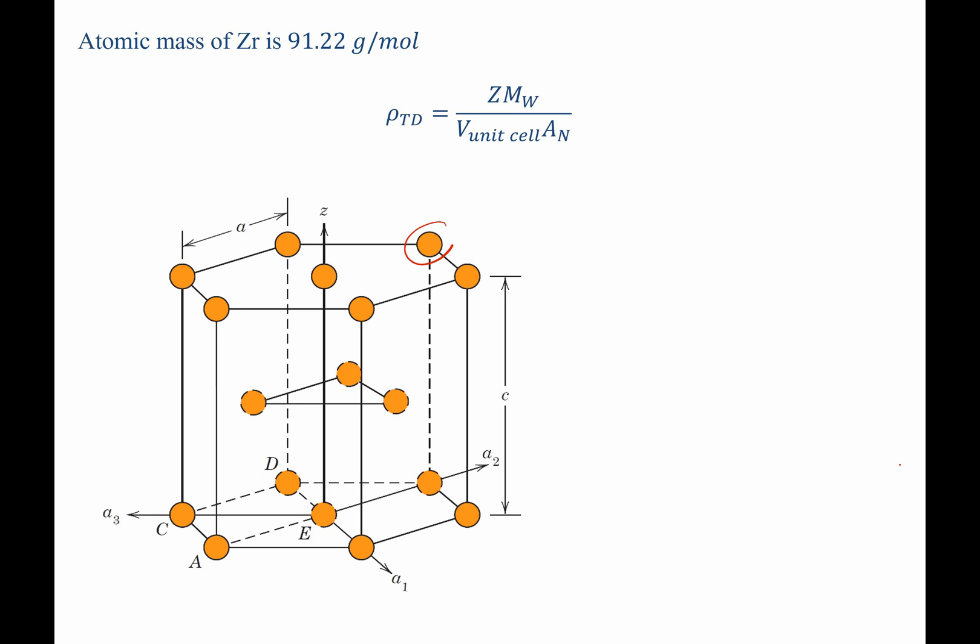There are twelve of these atoms on the corners, and those are each one-sixth of the way inside. We also have two atoms along the top and bottom basal plane, centered. So those are half in and half out. And then we have these three atoms that are completely within the hexagonal prism. Adding these up, we get to the six atoms.